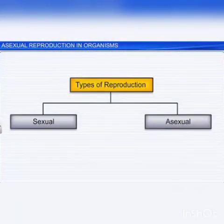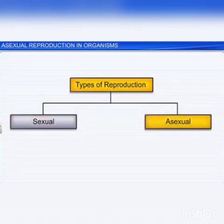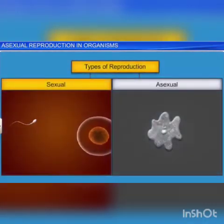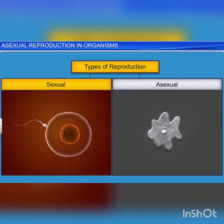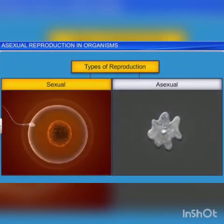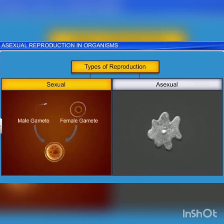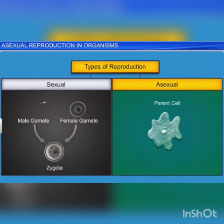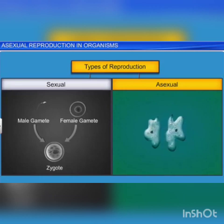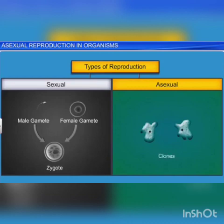In living organisms, we see two types of reproduction: sexual and asexual. In sexual reproduction, a gamete from the male parent fuses with a gamete from the female parent to form a zygote. However, in asexual reproduction, the organism or the parent cell divides to give rise to morphologically and genetically identical organisms called clones.